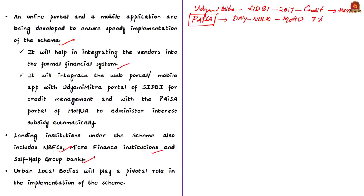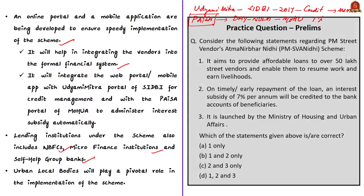Urban local bodies will play a pivotal role in implementation of this scheme. The correct answer to the given question is option D: 1, 2 and 3, since all three statements are correct about the SVANidhi scheme.